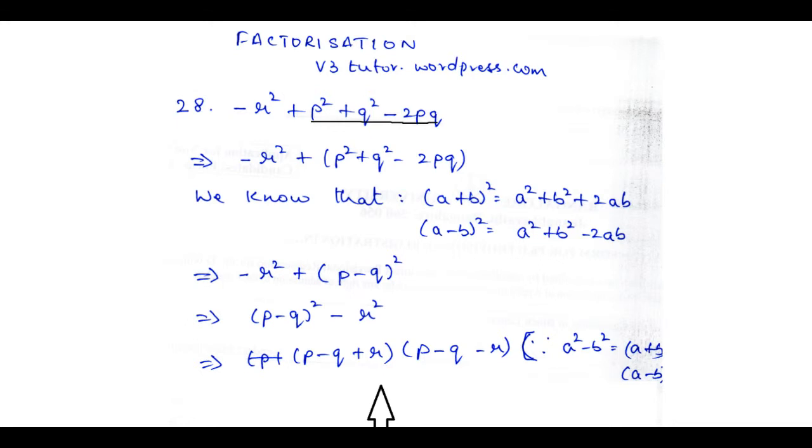So this is the identity that we are going to use, and in this particular expression we can identify P minus Q as A and R as B. So what happens? This becomes P minus Q plus R, that is A plus B, into P minus Q minus R, that is A minus B. So after having applied this identity, we have written this entire expression as P minus Q plus R into P minus Q minus R. This is the solution for this particular expression.